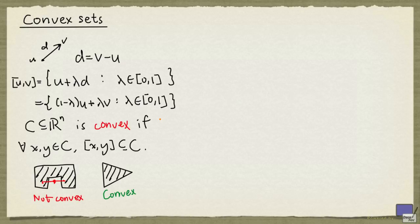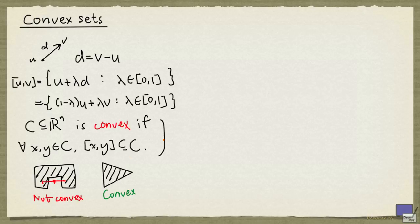Notice that by this definition, the empty set is convex, because this condition will hold vacuously. There's no point in the empty set, so there's no way you can pick a pair of points, and so there's no need to check this.